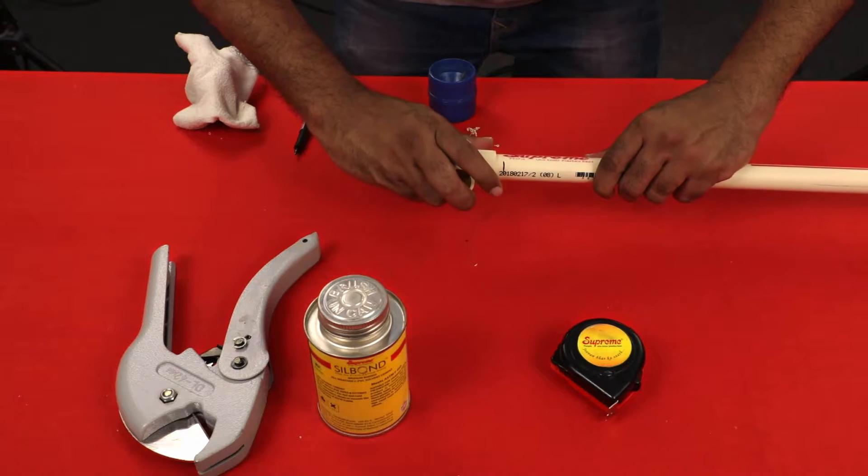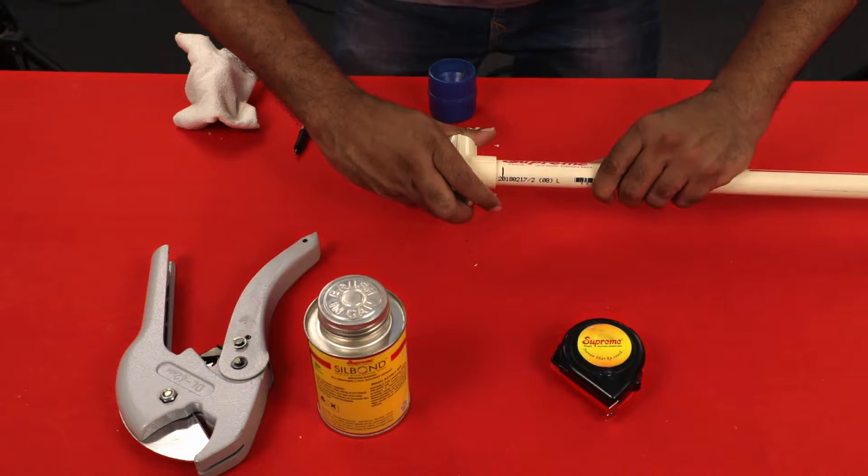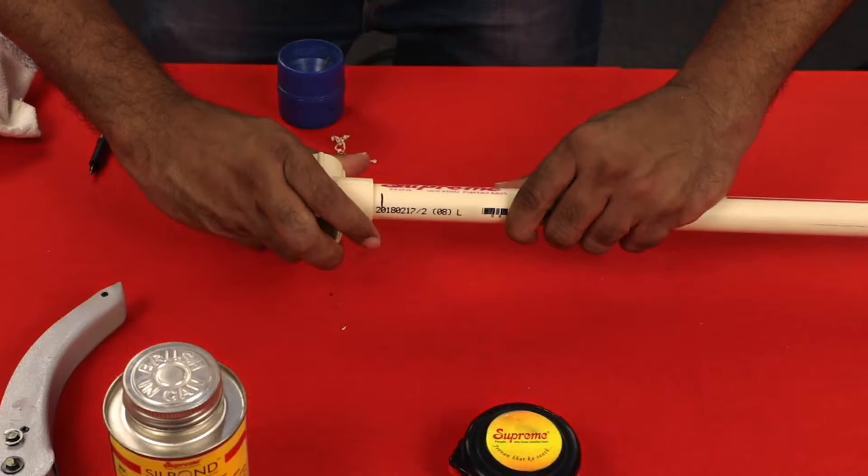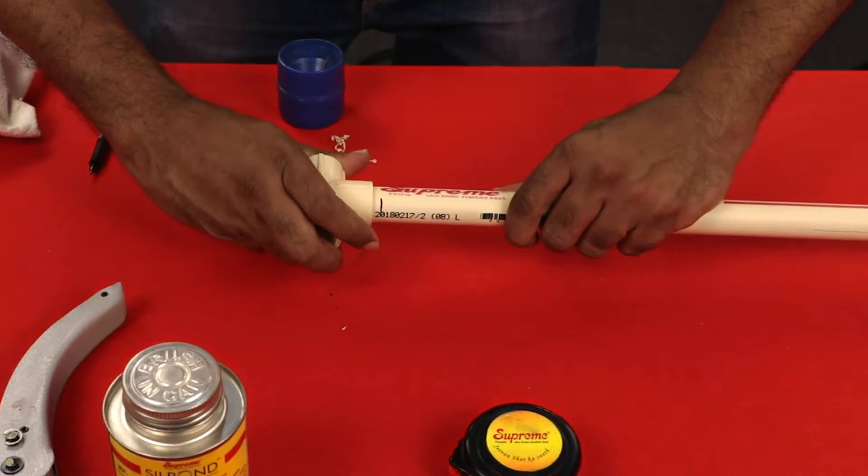Insert the pipe into the fitting and check that the interference occurs at about one-third to two-third of the socket depth. Too tight or too loose fitting may lead to leakages.